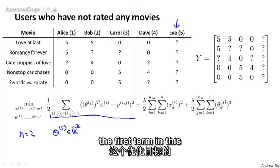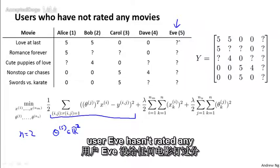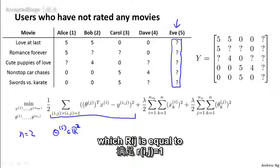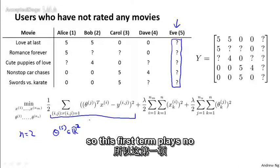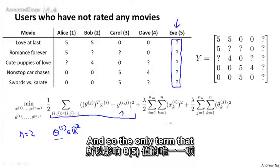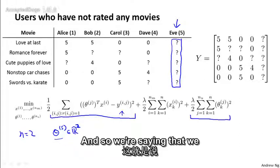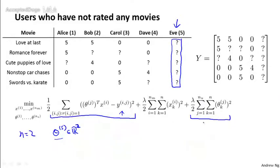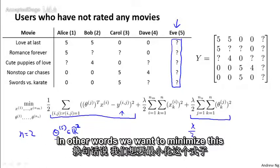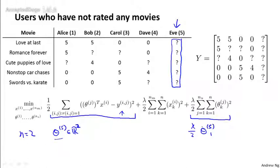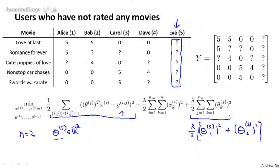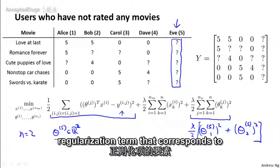So, if we look in the first term in this optimization objective, well, the user Eve hasn't rated any movies, and so there are no movies for which rij is equal to 1 for the user Eve, and so this first term plays no role at all in determining theta 5. And so the only term that affects theta 5 is this regularization term.